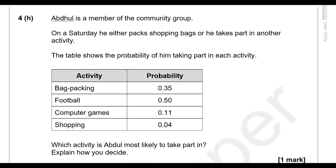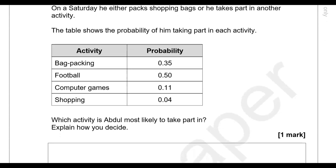Atul is a member of the community group. On a Saturday he either packs shopping bags or takes part in another activity. The table shows the probability of him taking part in each activity. Which activity is Atul most likely to take part in, and how do you decide?